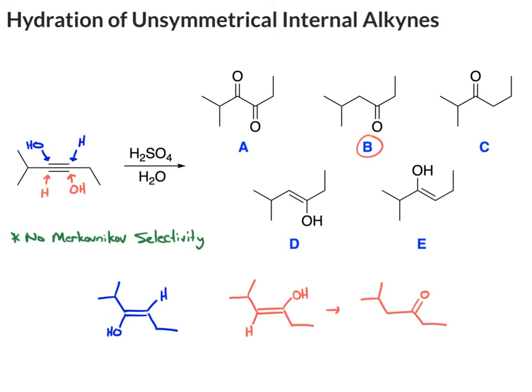Doing the same thing to the blue structure: the alkene goes to the single bond, and the OH becomes a double-bond O, giving a ketone with an isopropyl group and a propyl group attached — and that matches answer choice C. So both B and C are products of this reaction.